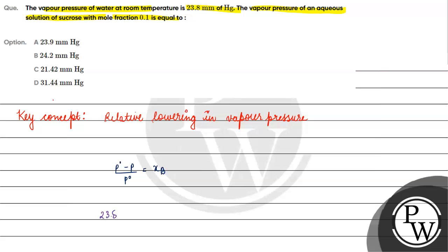So we have (23.8 - p) / 23.8 equals the mole fraction of the solute. The mole fraction of the solute is 0.1, so 23.8 - p equals 23.8 times 0.1.